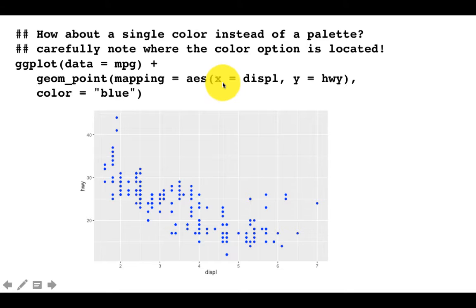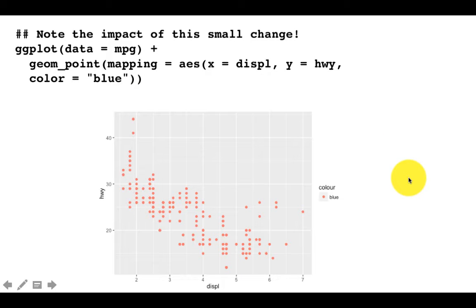This is very different from the earlier slide where color was inside the aesthetics, meaning we wanted every point to be plotted in a color depending on a particular variable like class. But if you want a fixed color, don't put it inside the aesthetics, put it outside.